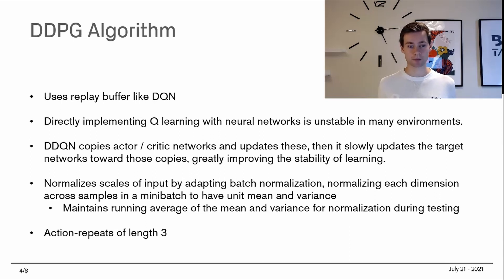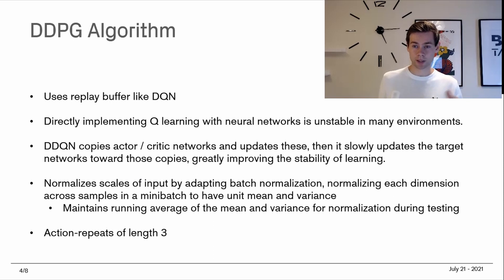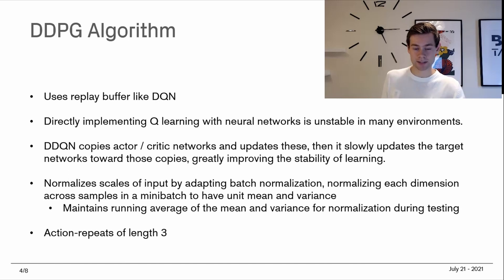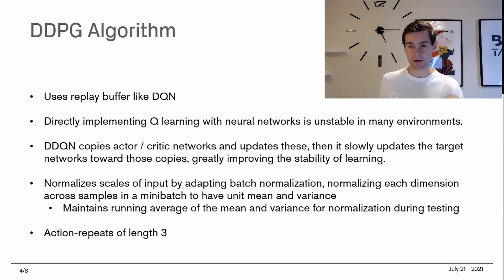Directly implementing Q-learning with neural networks is unstable in many environments. The algorithm copies the actor and critic networks and slowly updates the target network toward these copies, greatly improving stability of learning. We have two versions of the networks: one that receives updates immediately, and one used for acting that gets slowly updated with those values continuously — we don't transfer all learning to the active network right away. This slows down learning somewhat, but is largely outweighed by the increased stability.